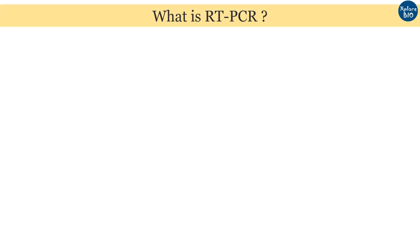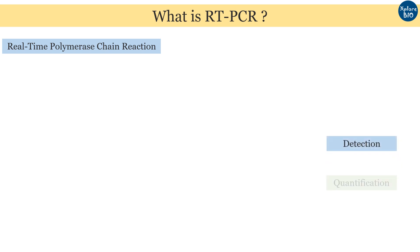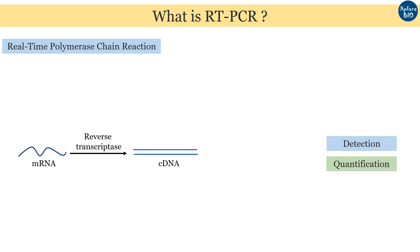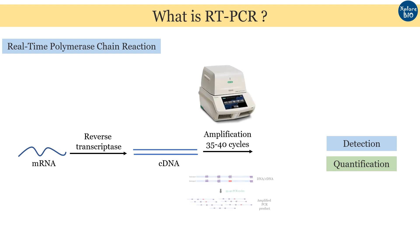RT-PCR is short for real-time polymerase chain reaction. It is a PCR variant in which one can detect and quantify the expression of a target gene based on the fluorescence produced upon template amplification. In RT-PCR, the mRNA acts as the initial template which gets reverse transcribed to cDNA. This cDNA undergoes several rounds of PCR amplification, which leads to an increase in the fluorescence signal detected by the machine.